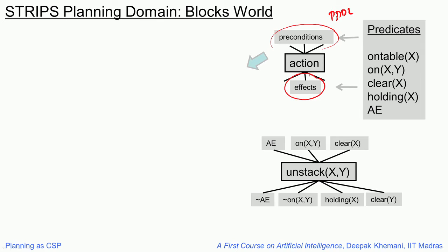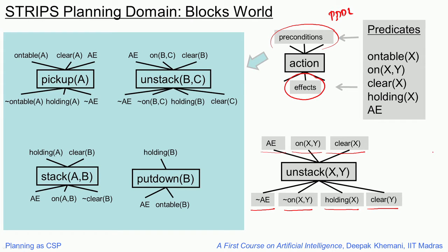The planner can reason with different available actions, see which are applicable, and choose among them. One action in the blocks world domain is unstack(x, y). Its preconditions are that the robot arm must be empty, x must be on y, and there must be nothing on top of x. If those conditions are true, you can do unstack — the arm will no longer be empty because you would be holding x, x will no longer be on y, and y will become clear. In the STRIPS blocks world domain, there are four actions: unstack, pick up from the table, put down on the table, and stack a block onto another.